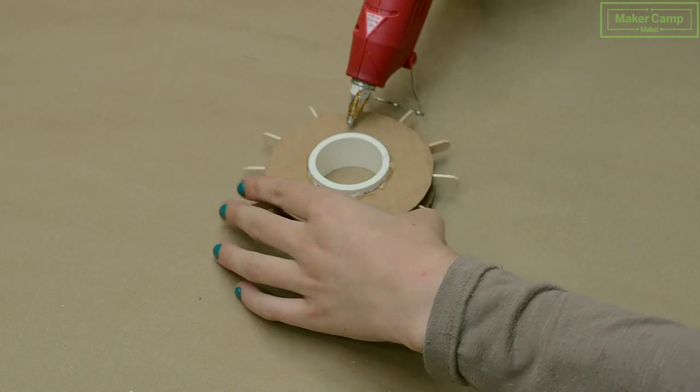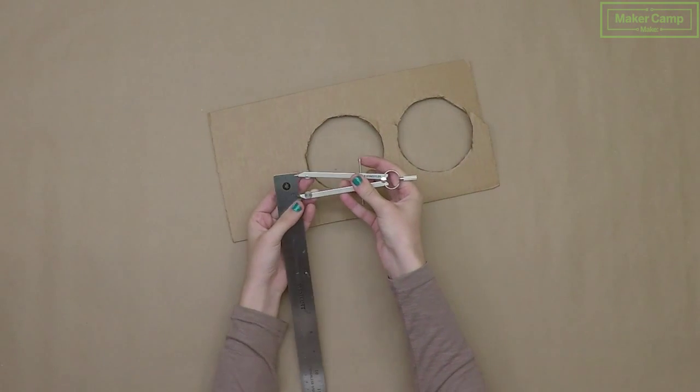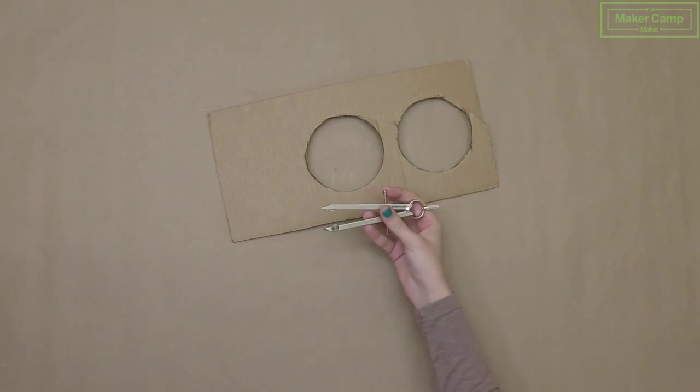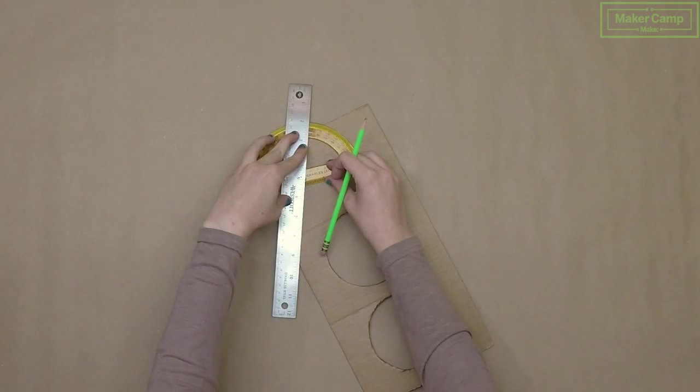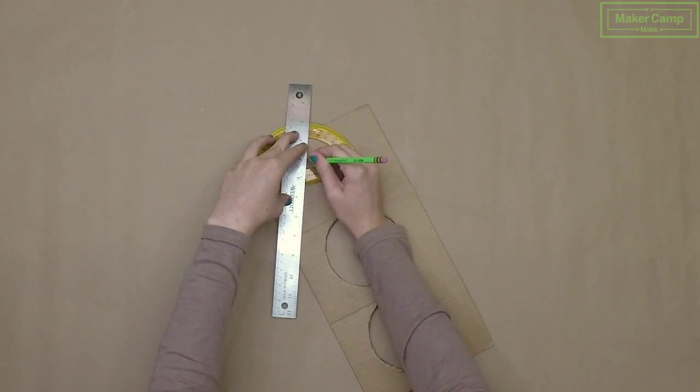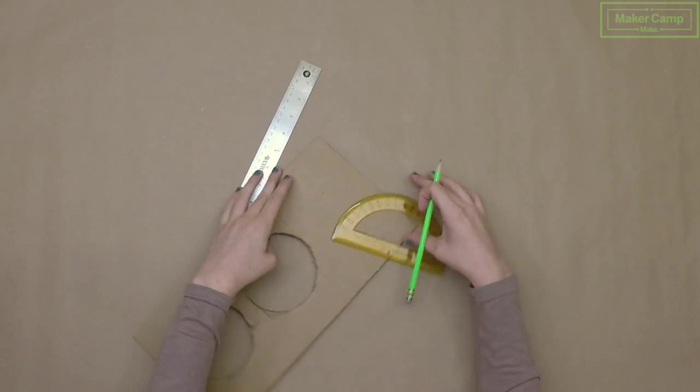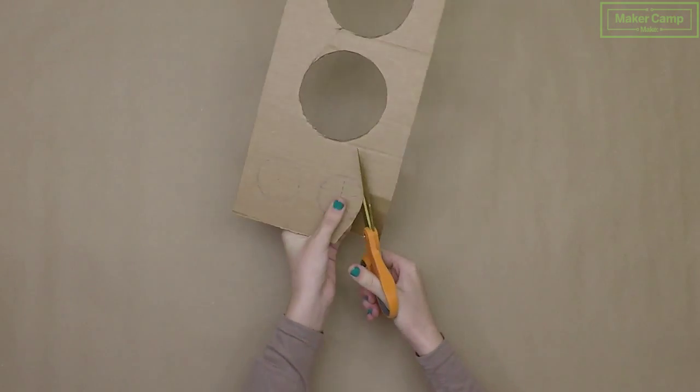Now we're going to make our smaller gear. Draw two two inch diameter circles onto your cardboard scrap. Divide one of the two circles into fifths. Cut both circles out.